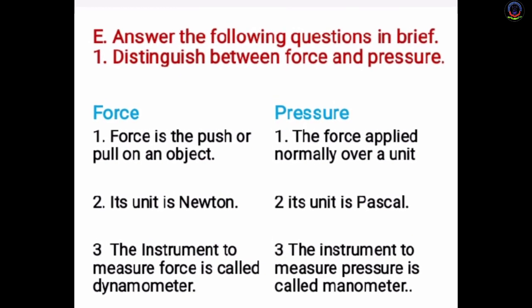Question E, Question 1: Distinguish between force and pressure. Point 1 — Force is the push or pull on an object; Pressure is the force applied normally over a unit area. Point 2 — The unit of force is Newton; the unit of pressure is Pascal. Point 3 — The instrument to measure force is a dynamometer; the instrument to measure pressure is a manometer.